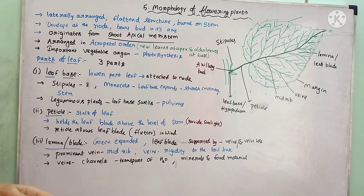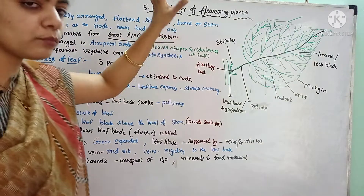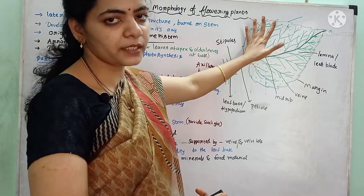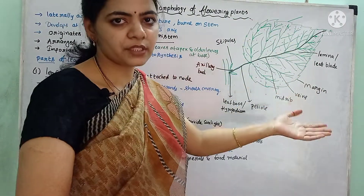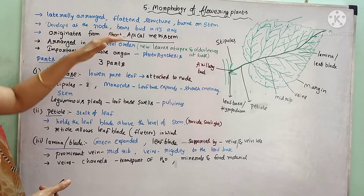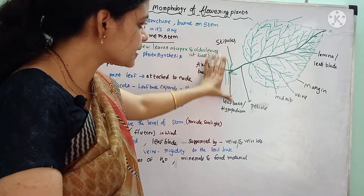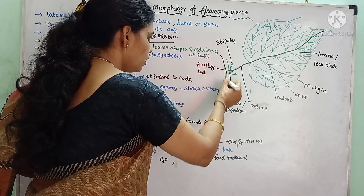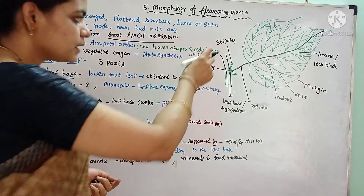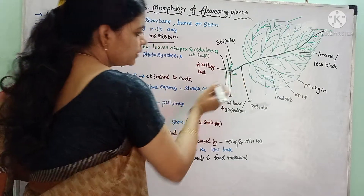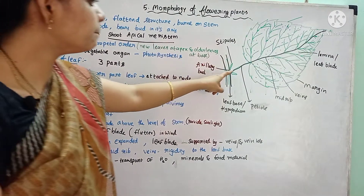The leaves are laterally arranged structures, and mostly these leaves are flattened structures. In some plants they may be fleshy and modified into different structures, but in the majority of plants they contain flattened structures only. They are born on the stem, specifically at the node, and they develop from the node region.